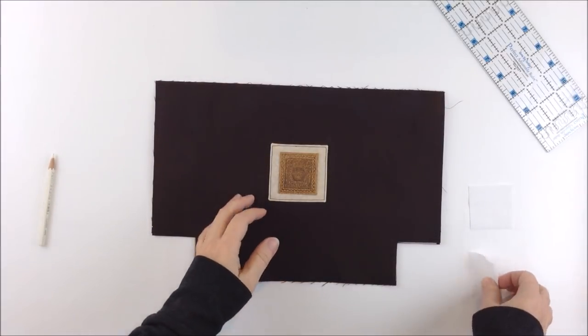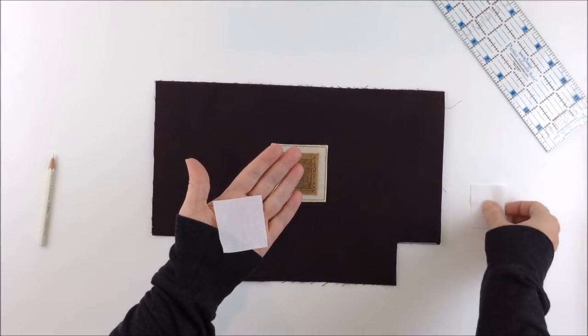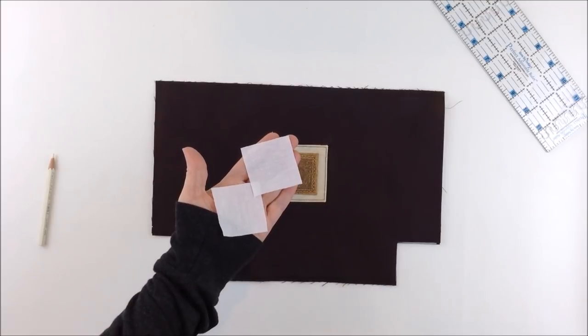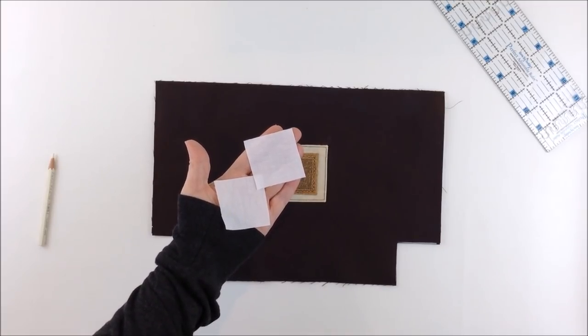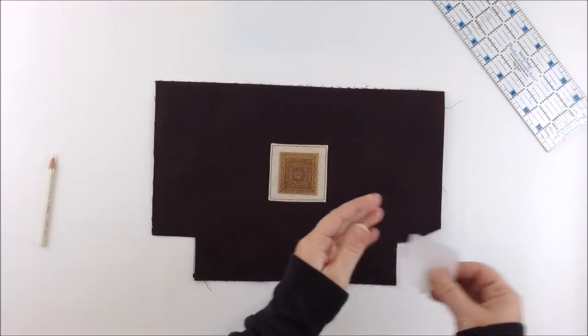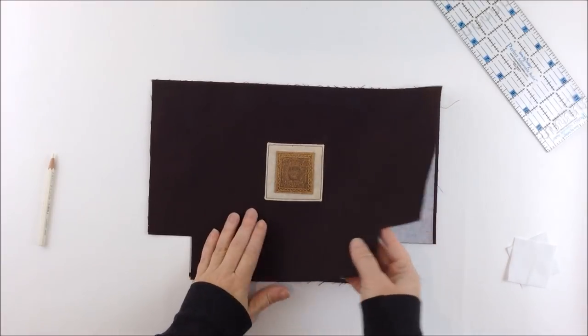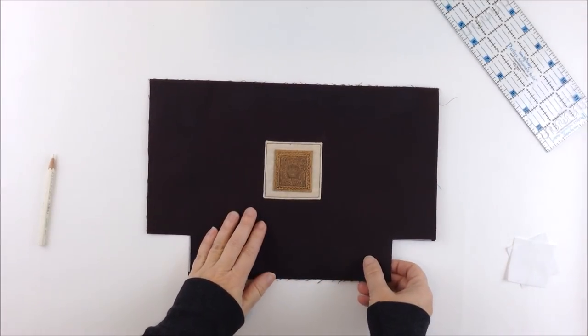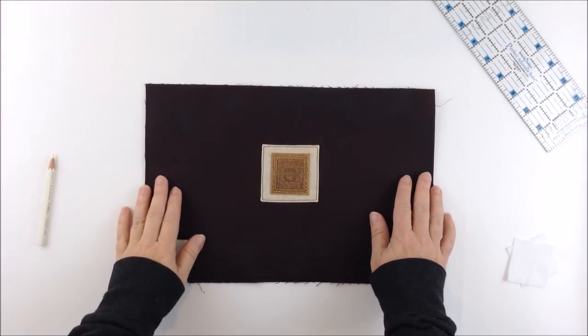Then you're going to cut two extra pieces of SF-101 interfacing both measuring two inches square. Next place the two outer pieces wrong sides together and then you need to decide which end you want your handle.